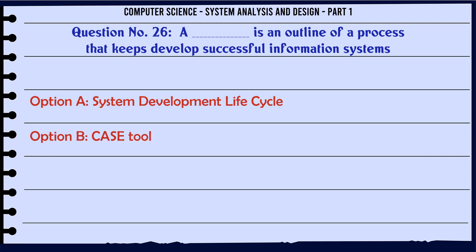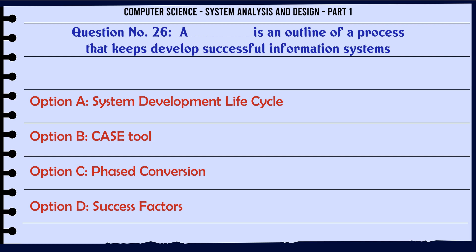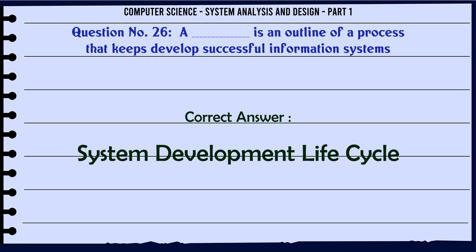The system development life cycle is an outline of a process that helps develop successful information systems. A. System development life cycle. B. Case tool. C. Phased conversion. D. Success factors. The correct answer is: System development life cycle.